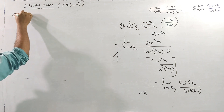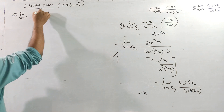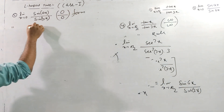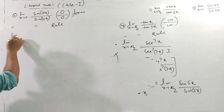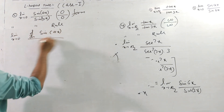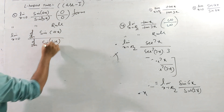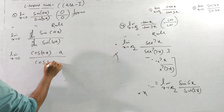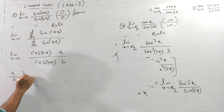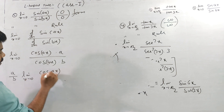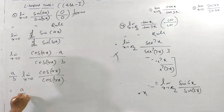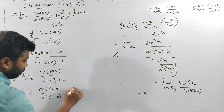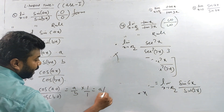Question number 5: limit x tends to 0 of sin(ax)/sin(bx). Substituting gives 0/0. Apply L'Hôpital's rule: limit x tends to 0 of derivative of sin(ax) by derivative of sin(bx), which is cos(ax) times a over cos(bx) times b.